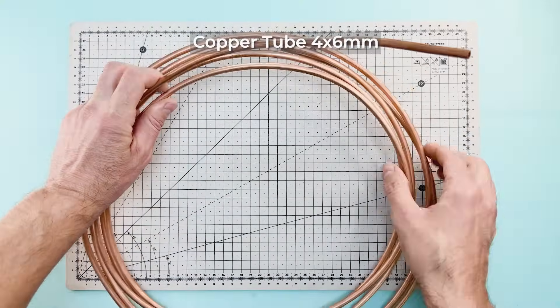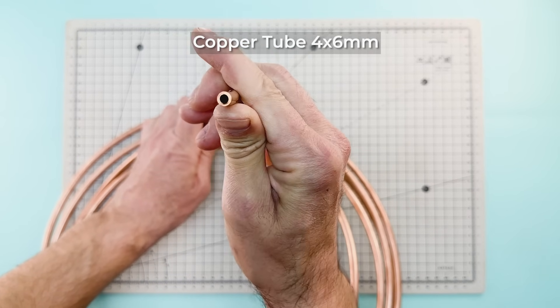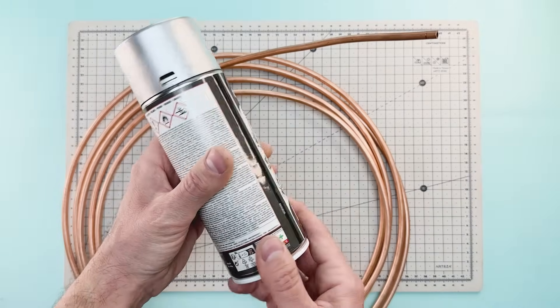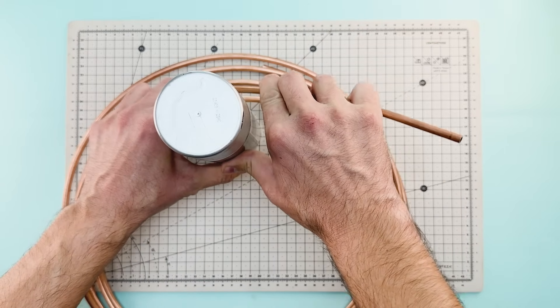To begin, we'll need a copper tube with a 4 by 6 millimeter diameter. Using something round like this paint can, we'll bend the copper into a spiral.